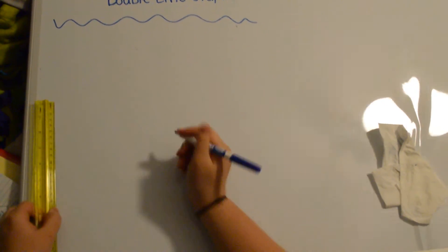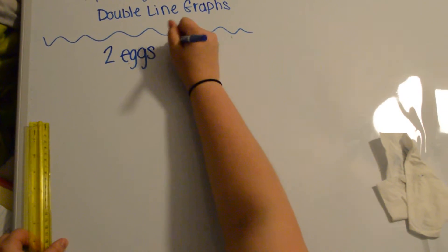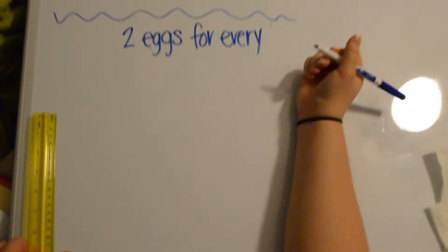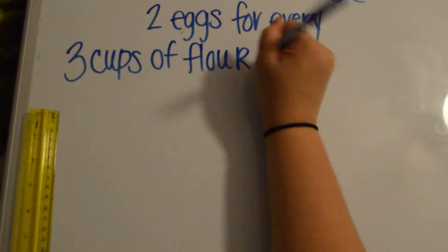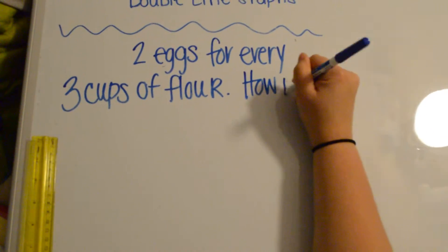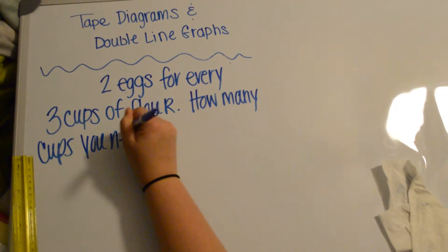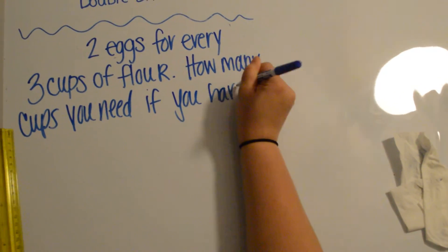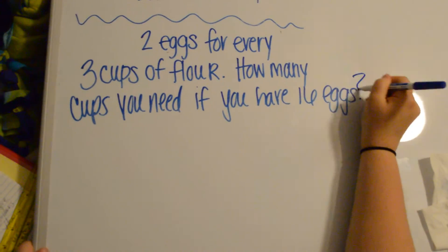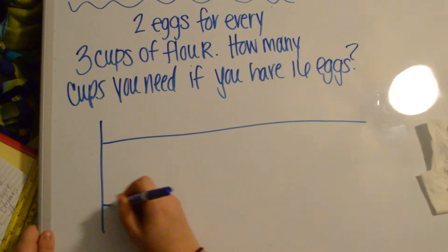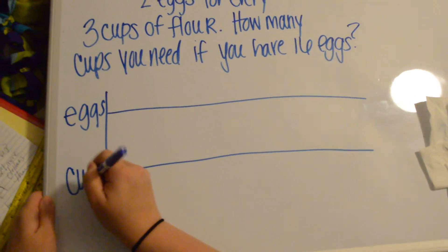So let's say you use 2 eggs for every 3 cups of flour in your recipe, and you want to know how many cups you need if you have 16 eggs. We're going to draw our double number line. One line will be eggs and one line will be cups of flour.